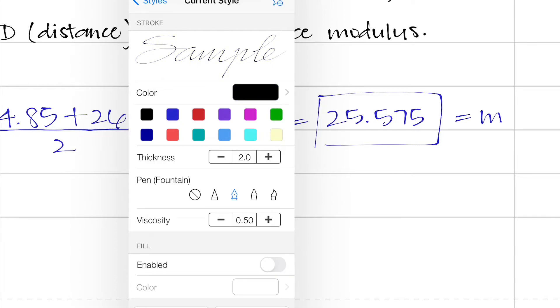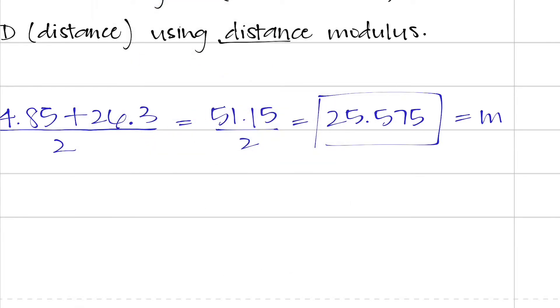So if we remember the distance modulus, which we'll ultimately have to use, capital D for the distance is equal to 10 to the power of lowercase m, so apparent magnitude, minus capital M, or absolute magnitude, plus 5, all over 5. So we'll come back and take a look at that equation at the very end, which will give us the distance to the Cepheid variable.